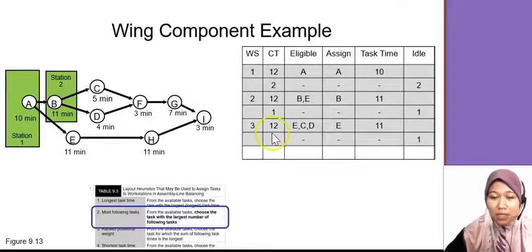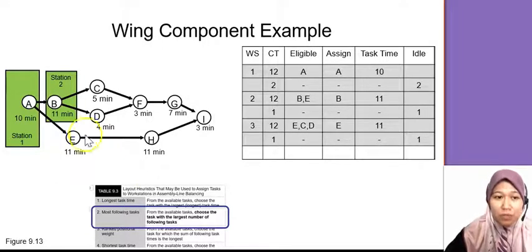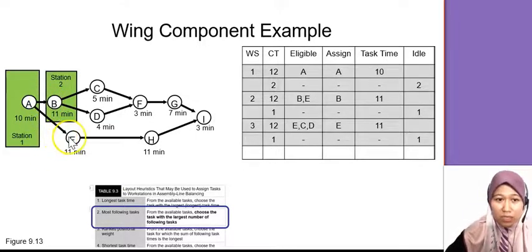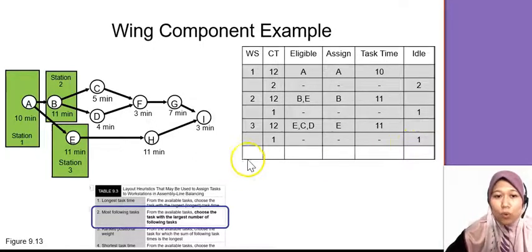Now you're going to open the third workstation. Third workstation starts with 12 again, the cycle time, and now you have the option of C, D, E. Is there any rules to follow? No need anymore because we're done with this one. Next you just follow which one is the best without any waste. For this one, I choose E because E is the biggest one there. So there's no waste. E is 11. So there's 1 left. Both cannot fit. So I close the third workstation with 1 idle time.